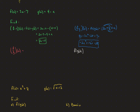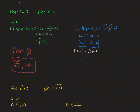For f over g of x, we write f(x) over g(x) as a fraction, but we must state the new domain: since the denominator can't be 0, the domain is everything except x equals 4. For f of g of x, we plug g(x) = 4 minus x into f, getting 2(4 minus x) minus 7, which equals 8 minus 2x minus 7, or 1 minus 2x.